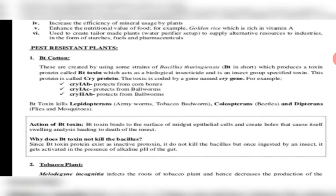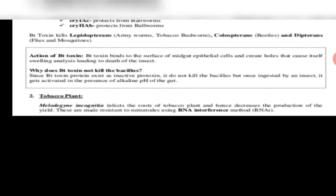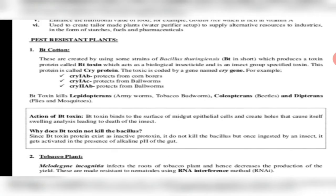How does it act? As soon as it reaches the midgut of the insect, in the alkaline pH, this crystal protein is activated and creates holes, causes swelling, and causes the death of the insect. But it will not affect us. Since BT toxin protein exists as an inactive pro-toxin, it does not kill the Bacillus. But once it is ingested by the insect, it will kill the insect. So it is not harmful for us.